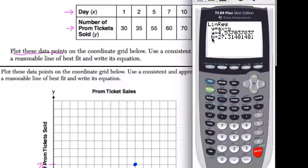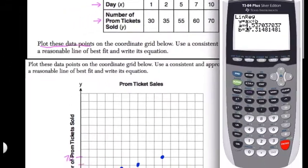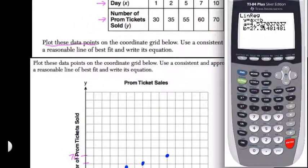This is a little confusing, but hit the VARS button. Y variables and function. Select Y1 to tell it what function to plot. Hit enter. Here it's giving you the line of best fit. Notice the slope is a = 4.537, so about 4.54. The y-intercept is 27.3148148. They don't give guidelines to approximate, which is a bit absurd, so let's use this exactly.